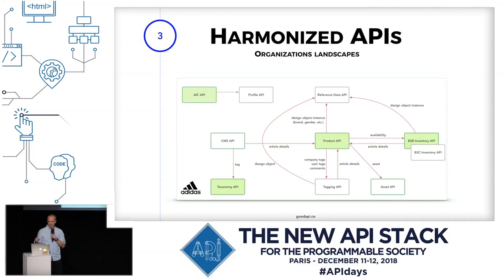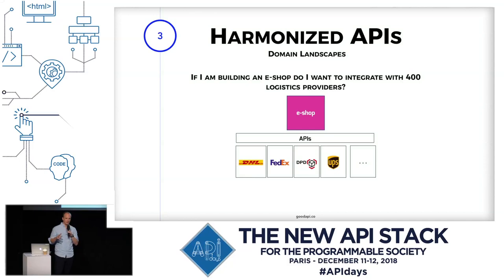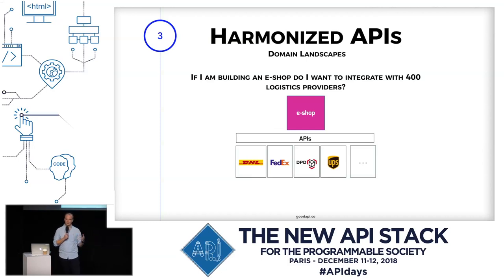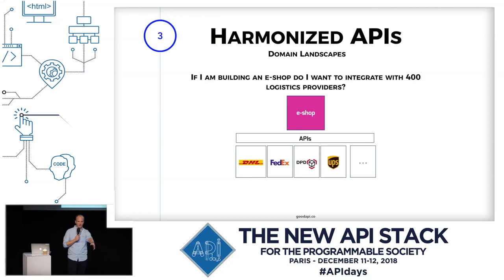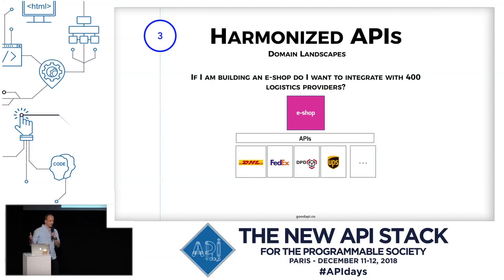APIs are also spanning domains — these landscapes span domains. Logistics is my favorite example. If you're building an e-shop, your business is not to integrate with all logistic providers so you can ship goods in the Philippines, France, or the US. That's not your business — that would take ages. So this is a logistic domain landscape: within one domain, multiple APIs, possibly from different vendors.